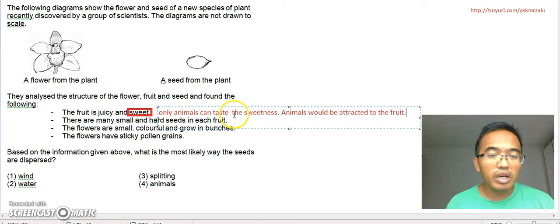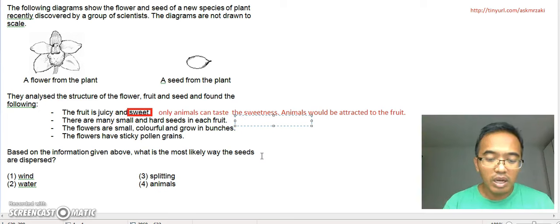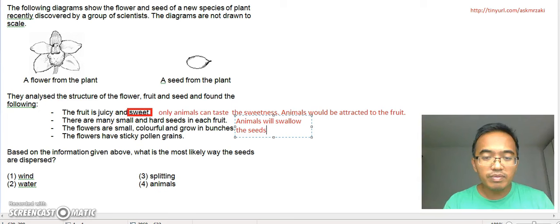Next is there are many small and hard seeds in each fruit. Small and hard. That means if an animal were to eat it, it can actually get into the animal digestive system and pass through the digestive system and leave the animal through the anus and get deposited somewhere else. So that means there's a high likelihood that the animals will swallow the seeds.